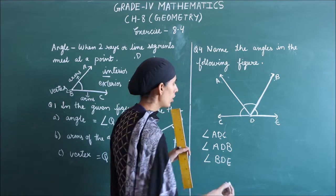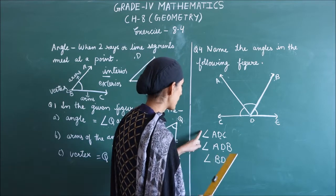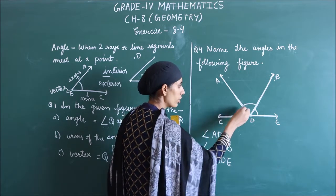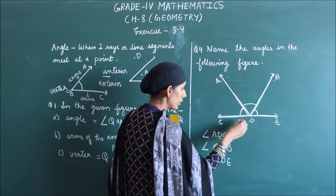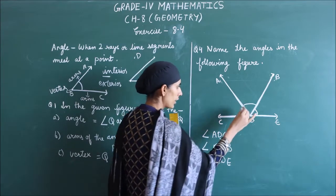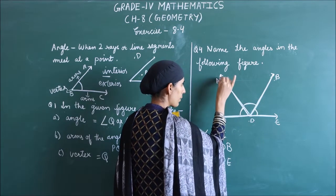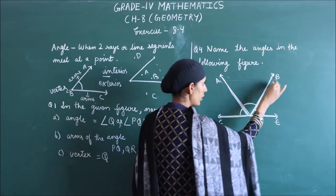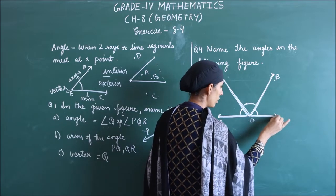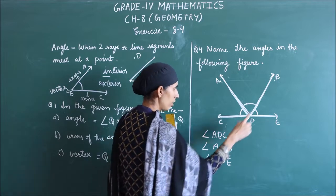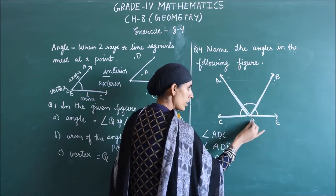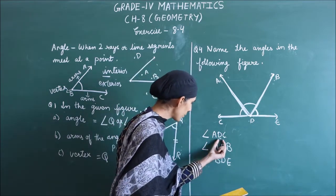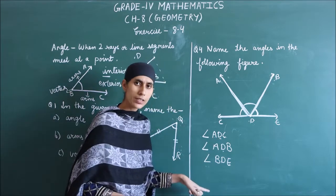And another one. So you have to understand here, two rays meet at one vertex. So you have angle ADC. This we have already named. Angle ADE, here you have to make it. And angle BDE or angle EDB, both are correct.